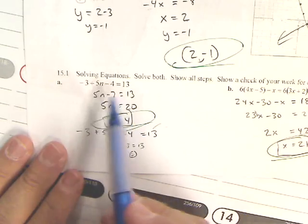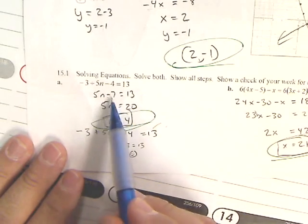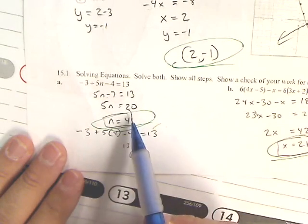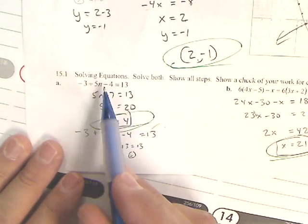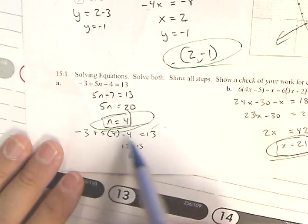Most people got this first one correct. Combine like terms, add seven to both sides, divide, and there we go. And of course, you check it by plugging in your answer in for the n, and then you solve.